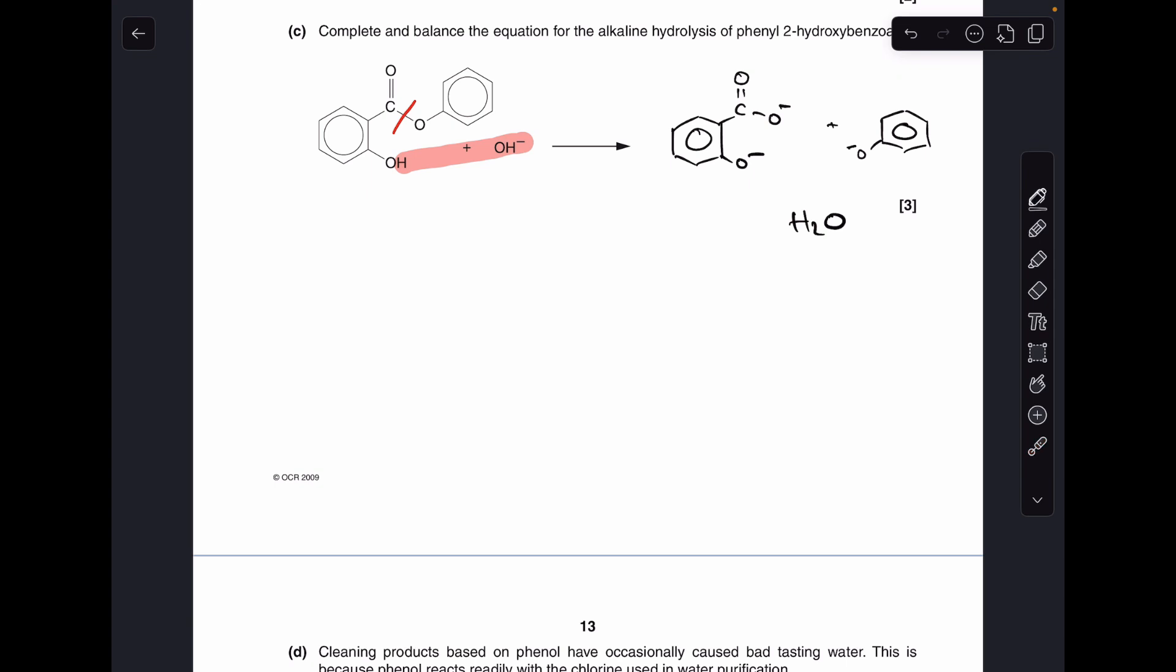Then obviously the last thing I'm going to do is balance the equation. So the first thing I'm going to do is look at the charge left and right. So I've got 1 minus charge on the left, 1, 2, 3 minus charge on the right. So I'm going to need a 3 in front of that hydroxide ion.